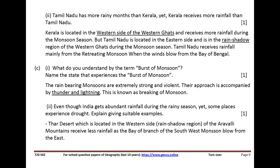Tamil Nadu has more rainy months than Kerala, yet Kerala receives more rainfall than Tamil Nadu. Kerala is located on the western side of the Western Ghats and receives more rainfall during the monsoon season. But Tamil Nadu is located on the eastern side and is in the rainshadow region of the Western Ghats during the monsoon season. Tamil Nadu receives rainfall mainly from the retreating monsoon when the winds blow from the Bay of Bengal.